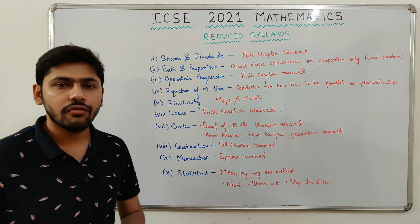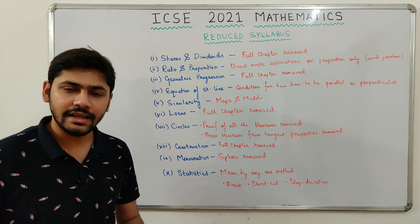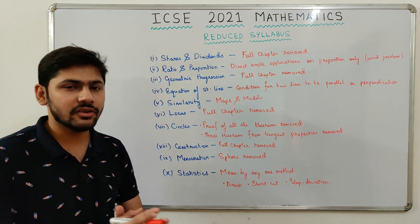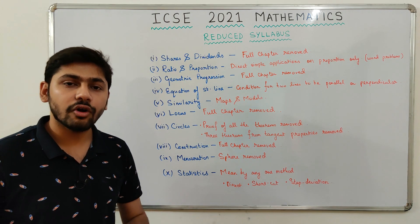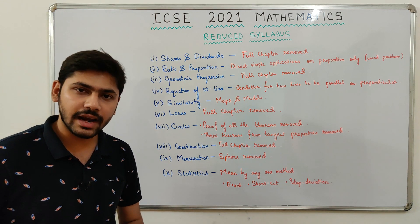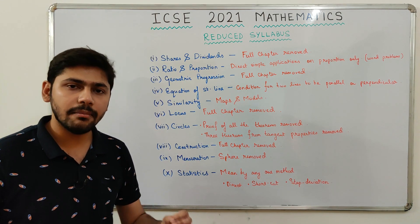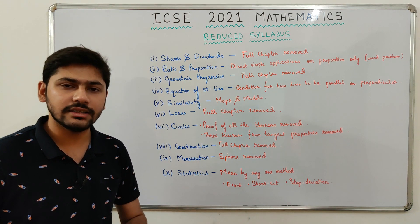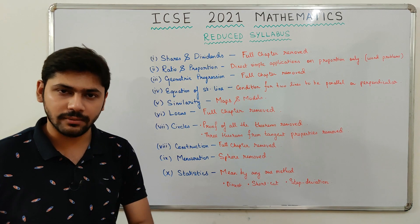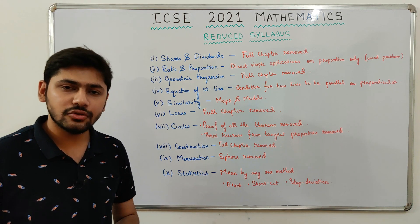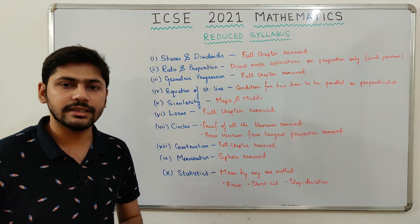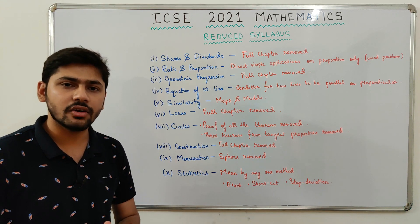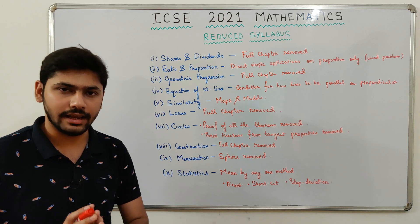Those two removed formulas are: for two parallel lines, M = M1; and for two perpendicular lines, M × M1 = -1. So these two formulas have been removed from the chapter Equation of a Straight Line.